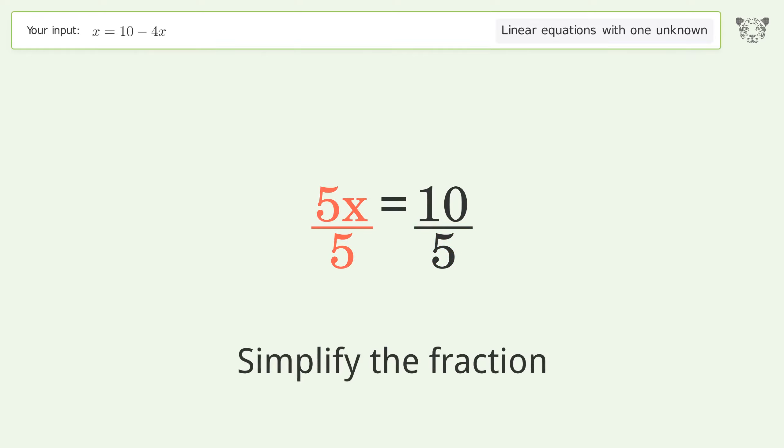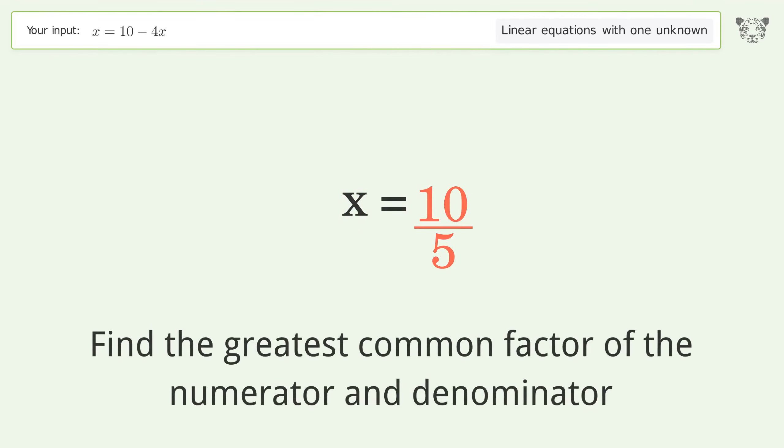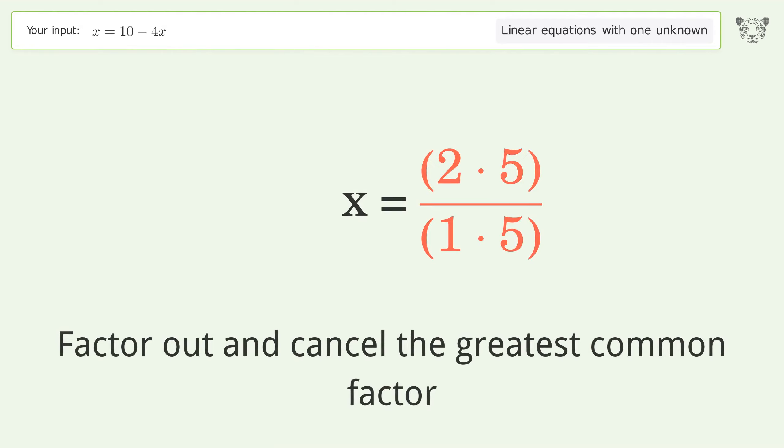Simplify the fraction. Find the greatest common factor of the numerator and denominator. Factor out and cancel the greatest common factor.